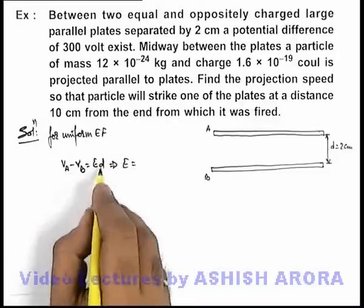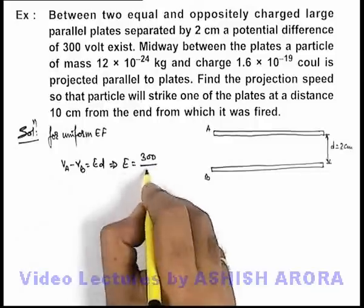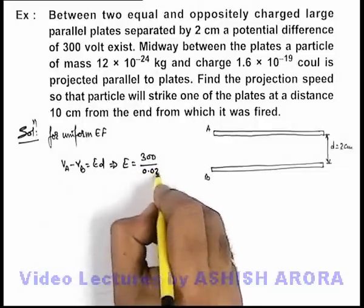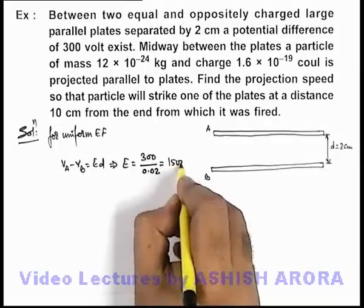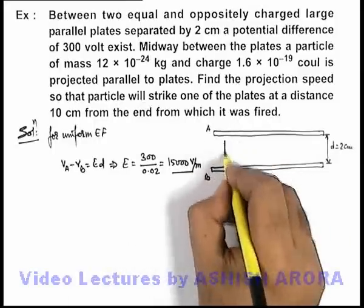Here we can calculate the value of electric field as potential difference, which is 300 divided by 0.02, which will be 15,000 volts per meter. This is the electric field which will exist between the plates.